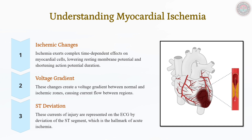ST elevation indicates acute transmural ischemia or complete occlusion, while ST depression suggests subendocardial ischemia, partial occlusion, or demand ischemia. ST elevation requires urgent reperfusion, whereas ST depression necessitates further assessment.